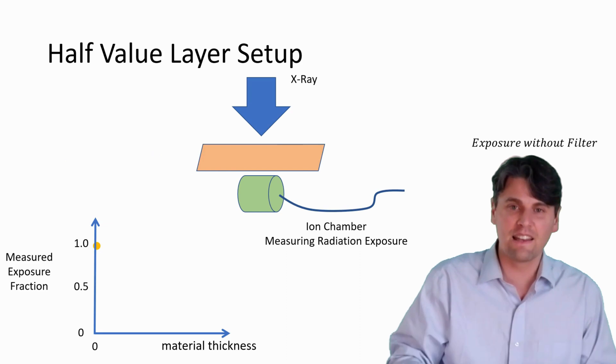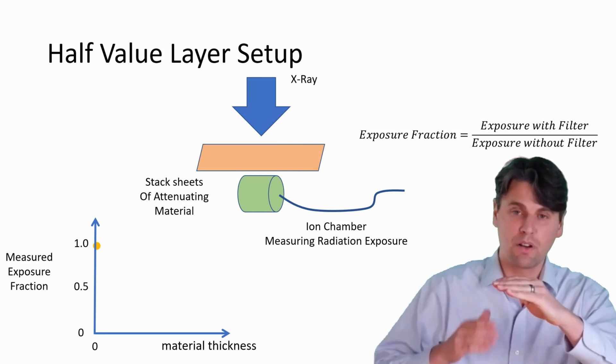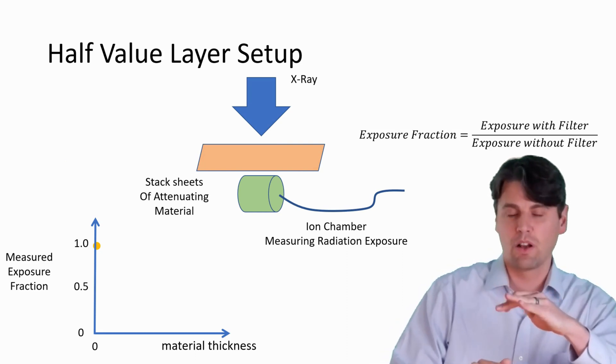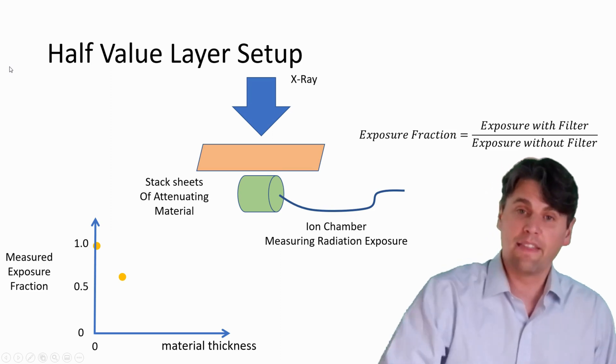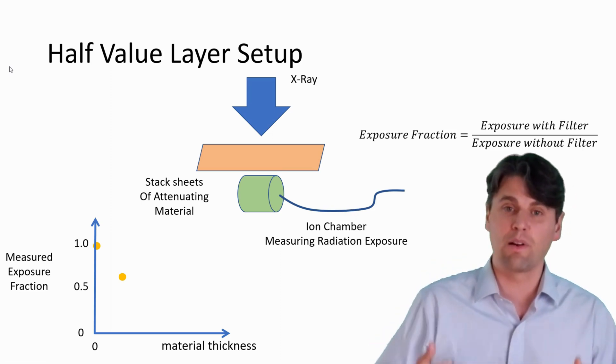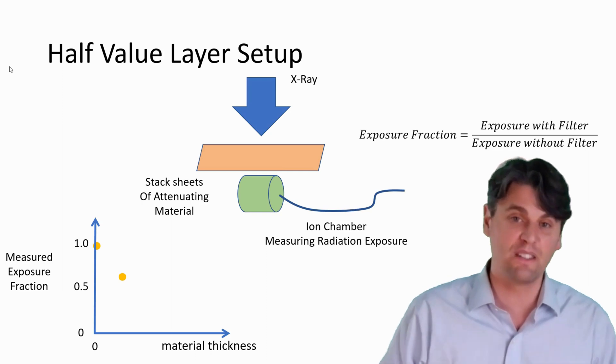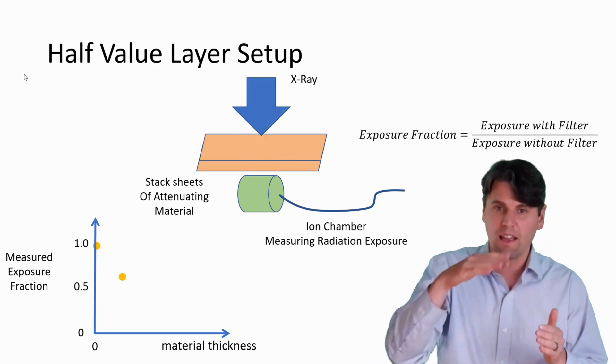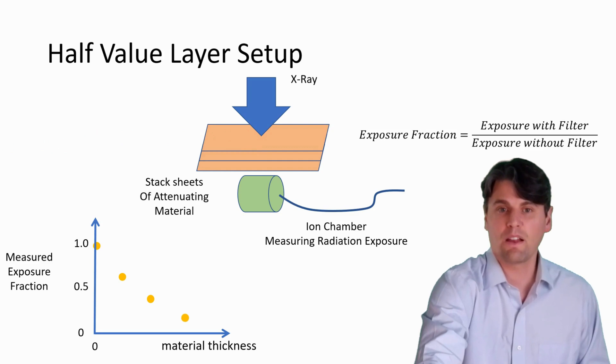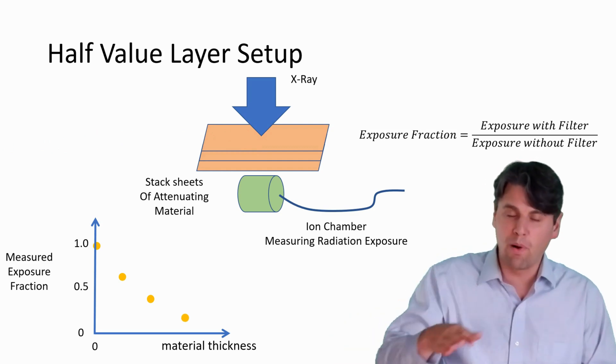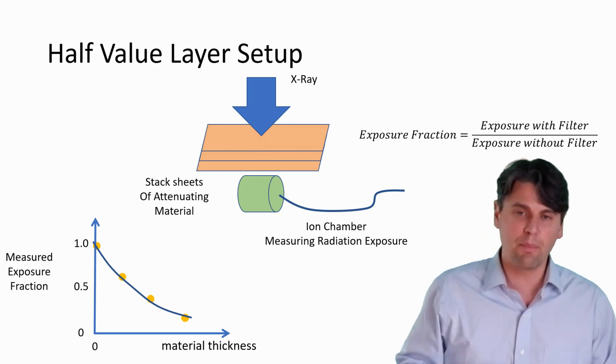Then we slide in a little bit of filtration there. We make a measurement again. And then we take the new measurement of the exposure divided by the original measurement of the exposure where there was no filtration. And then that'll give us a point on the curve. And the curve we're actually looking at is essentially the relative exposure on the y-axis. And on the x-axis, we're looking at the material thickness. Then we'll slide in another sheet and we'll get another point on the curve after we make a measurement. We'll do that again. And after we have a few of these measurements, you can see now that the points are actually making a curve.